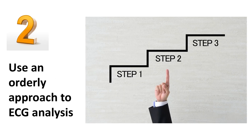Number two: use an orderly approach to ECG analysis. Developing a systematic approach will ensure that you have considered all the elements of the ECG. This data gives you detailed information about the underlying rhythm and the areas of insult or injury, guiding our interventions. We want to avoid errors in diagnosis that would lead to inappropriate treatment options.